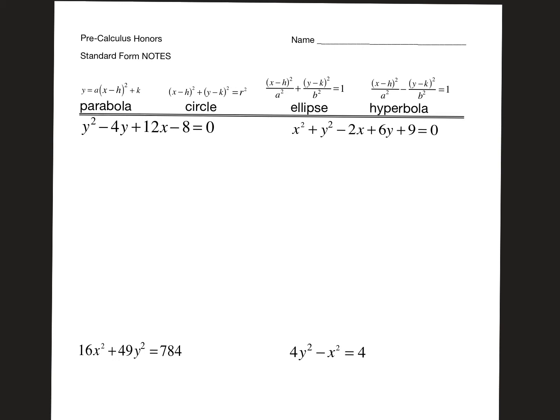Parabolas are very easy to tell because there's only one squared term. If you see an x-squared but the y is not squared, it's automatically a parabola. Hyperbolas are also pretty easy because there has to be subtraction in between the squared terms. If the squared terms have subtraction in between them, it's automatically a hyperbola.